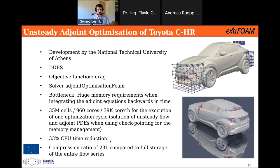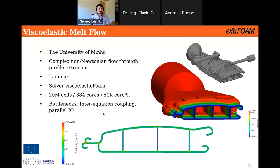Another industrial case is from the University of Minyo and is about profile extrusion. A melting flow comes from a pipe, goes into a form, and a profile is extruded in the direction out of the screen. The problems here are that the fluid is non-Newtonian and the bottleneck is inter-equation coupling. The goal is to have a homogeneous velocity distribution across the profile so that you don't get any inner stresses.